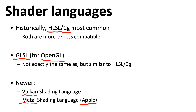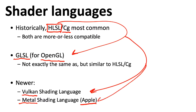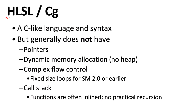What that means is that it's fairly easy for somebody who makes an engine, say Unity, to let you write your code in HLSL, and then Unity will translate it into these other languages as needed. From this point on, I'll mostly say HLSL, although everything I say about HLSL you could also apply to CG.